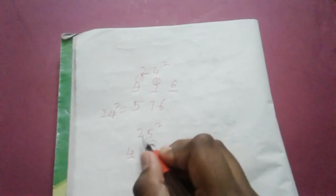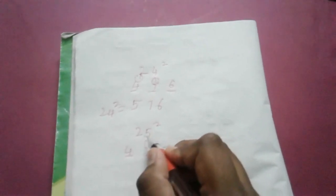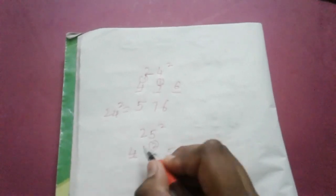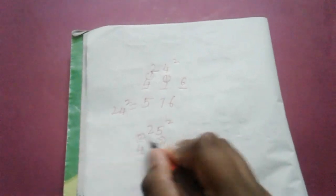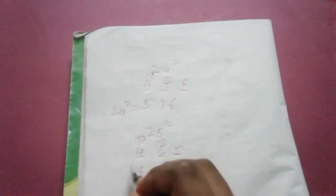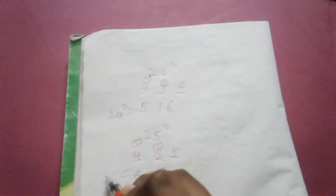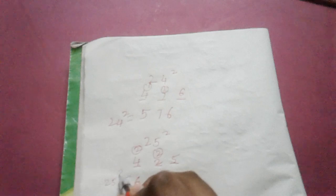Now, multiply these 3. 2 5s are 10. 10 2s are 20. 22. 625 is the square of 25.